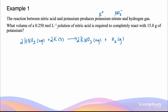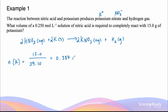What volume of 0.25 mol per liter solution of nitric acid is required to completely react with 15 grams of potassium? We first find the number of moles of potassium in 15 grams by dividing the mass by the molar mass of potassium, which is 39.10 grams per mole, giving 0.384 moles. The ratio of reaction between nitric acid and potassium is 2 to 2, or 1 to 1, so every mole of potassium requires one mole of nitric acid. The moles of nitric acid required is also 0.384 moles.